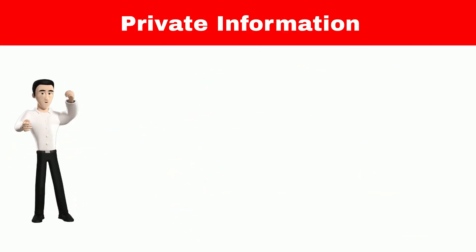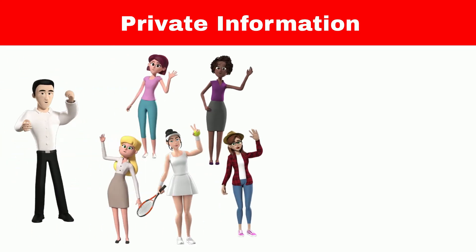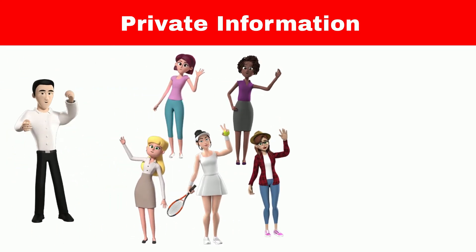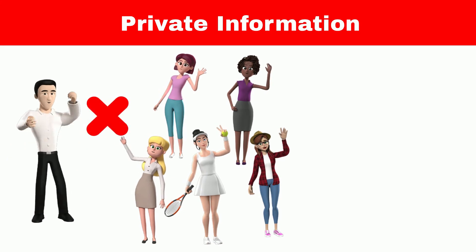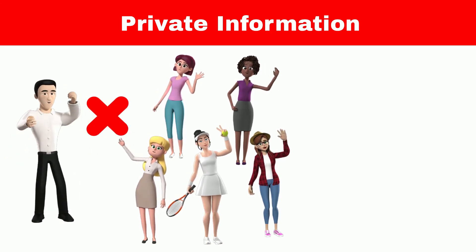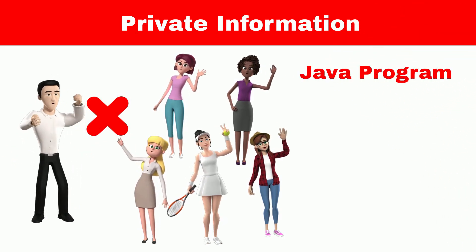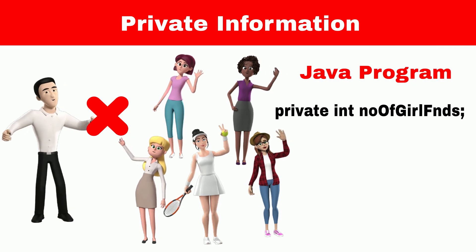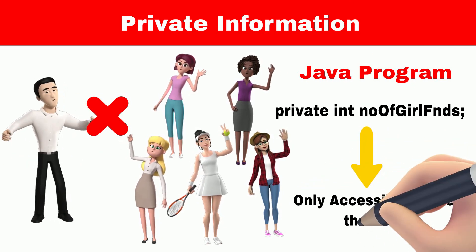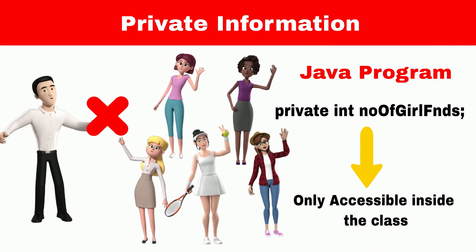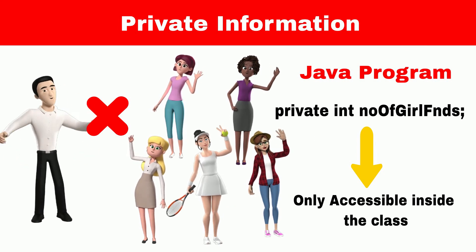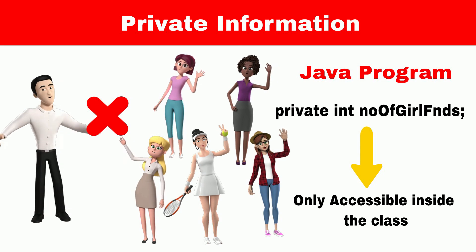Again coming back to Ross, some information Ross doesn't share with anyone — like he had five girlfriends in the past and he is still in contact with all of them. So he doesn't share this information with anyone; this information is private to him. Similarly, in a Java program, information that we don't want to share with anyone will be declared as private. For example, the integer variable numberOfGirlfriends will be accessed only within the same class and won't be shared with any other class. So the private keyword is used when we don't want to share information with any other classes.